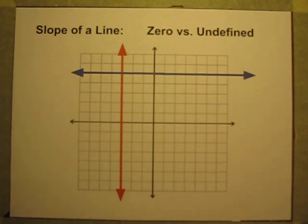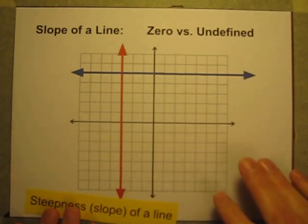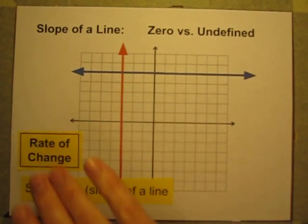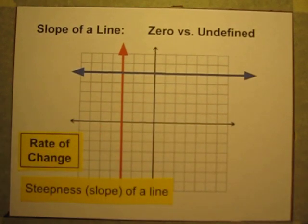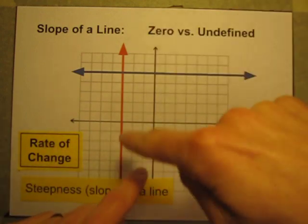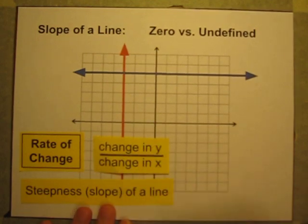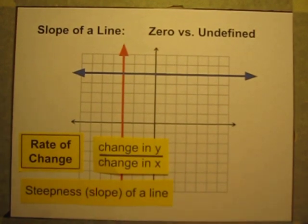If we're calculating steepnesses or slopes, we're really calculating rates of change. Rates of change between y-values on the y-axis and x-values on the x-axis. The way we calculate these rates of change is by doing the change in the y-values divided by the change in the x-values.